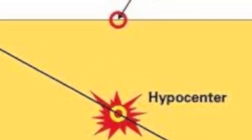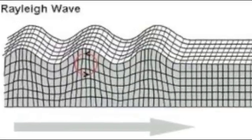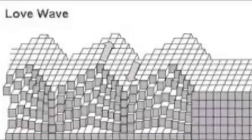Surface waves come directly from the epicenter of the earthquake, which is the exact point of origin of the quake, and is located just above the hypocenter. There are two different types of surface waves: Rayleigh waves, which come in a rolling motion, and love waves, which come in a side-to-side motion, doing most of the damage to buildings.